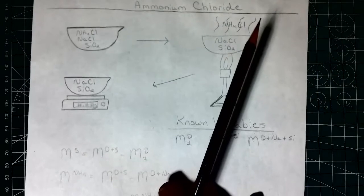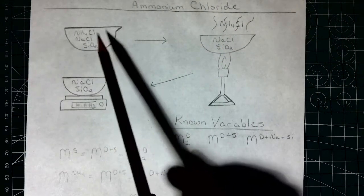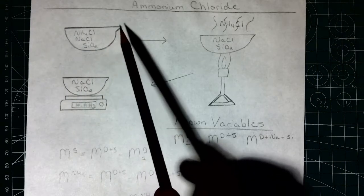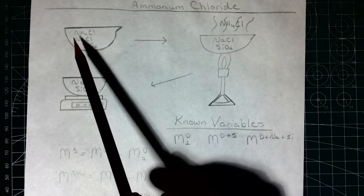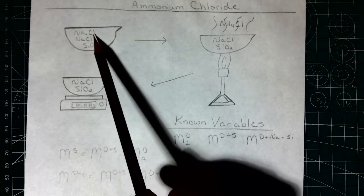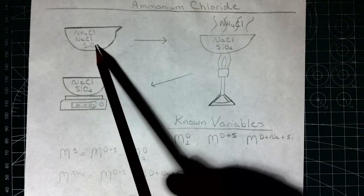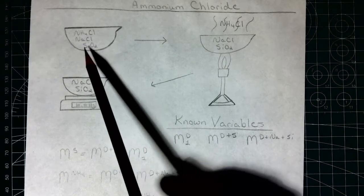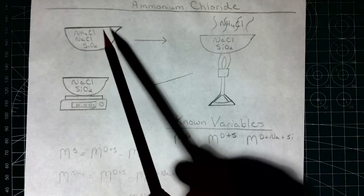Experimentally, we're going to take a dish — called an evaporation dish — and we know the mass of that dish. It's usually made out of ceramic and it's got a little lip on it for pouring stuff off. Inside of it we're going to put our sample. Our sample has ammonium chloride, sodium chloride, and silicon oxide — basically sand. We're going to separate it based on the different chemical properties of this mixture.